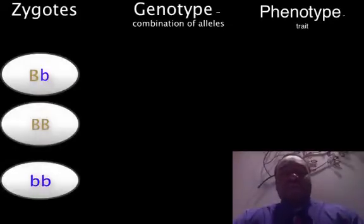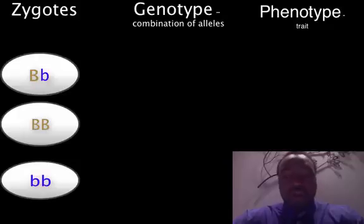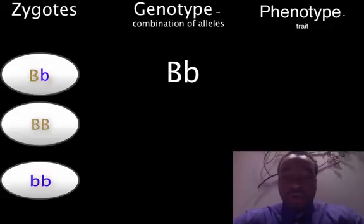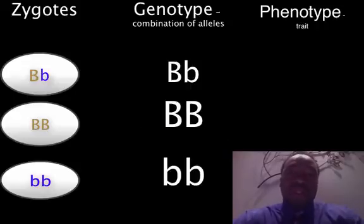We're going to put the pieces together to predict information about offspring. First we'll distinguish between the alleles of the organism and its displayed traits. Genotype — like the word gene — refers to the alleles of the organism and is represented by two letters. The phenotype refers to the actual displayed trait of the organism. So the first zygote's genotype is big B, little b, or heterozygous. The second zygote is big B, big B, or homozygous dominant. And the last zygote is little b, little b, or homozygous recessive.